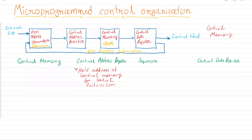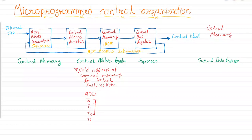For example, consider the ADD instruction. To execute it, we read the operand from memory, transfer it to the data register, add the operand to the accumulator, and set the extended accumulator. Although ADD is a simple instruction, in actual implementation it spans from T0 through T5 — fetch and decode at T0, T1, T2, effective address calculation at T3, operand retrieval at T4, and addition at T5.